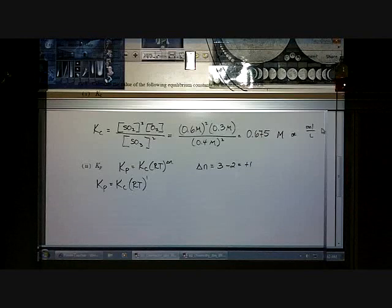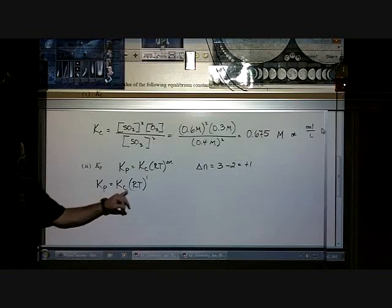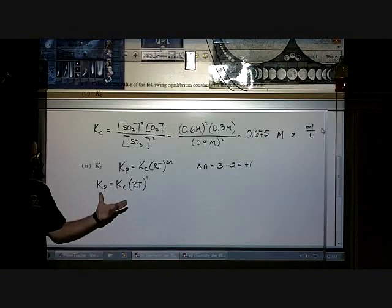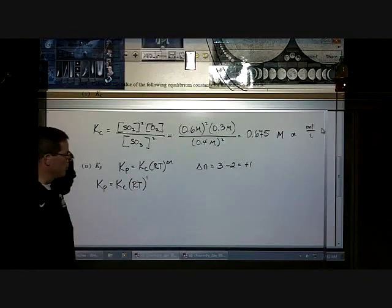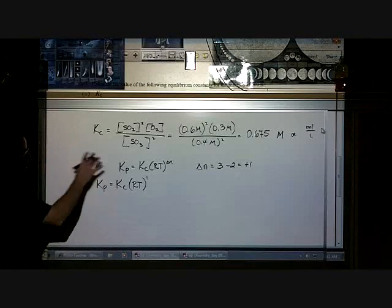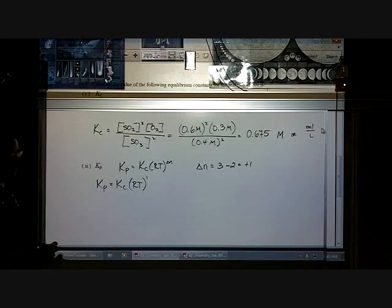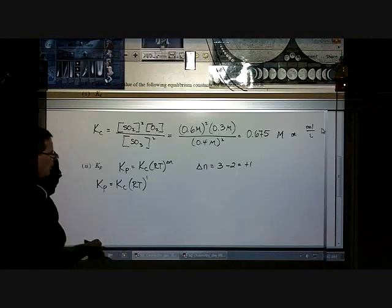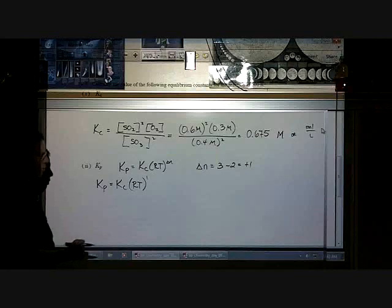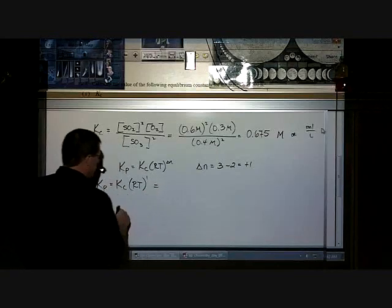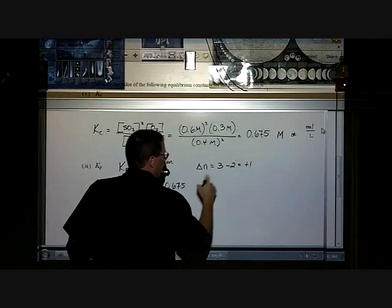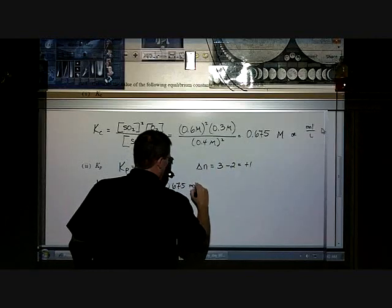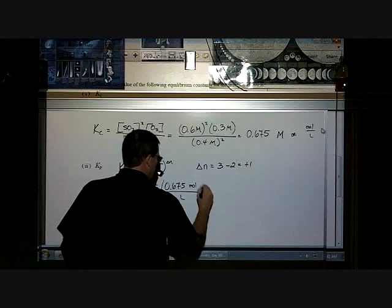And I will say from the quiz, some of you had some difficulty rearranging these. Some of you left the exponent negative, which gave you a really goofy unit. Just be careful with that. I know that I show a lot of steps and a lot of work. Be careful with the units. And the units usually will tell you if you're doing things right or not. So Kc, we have 0.675. And I'm not going to write molarity, but I'm going to write mole per liter. Because I want those units to cancel out.